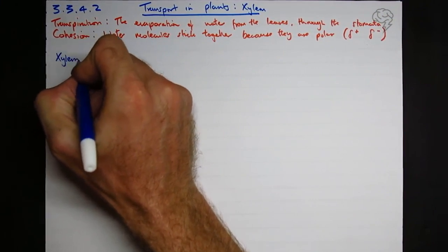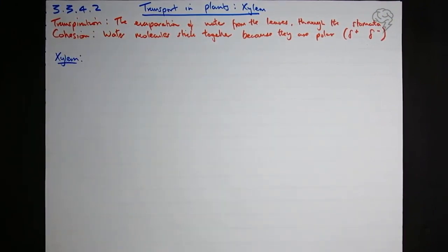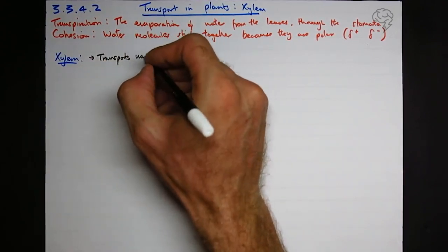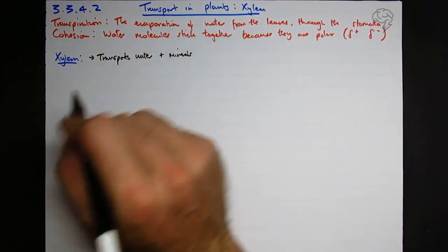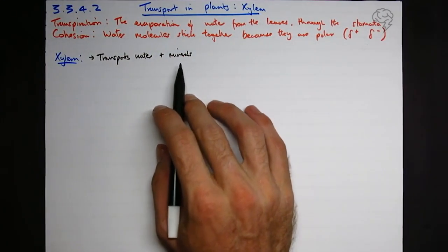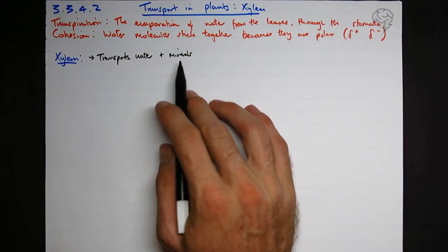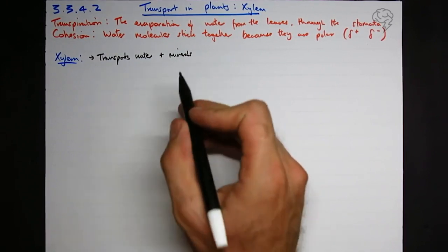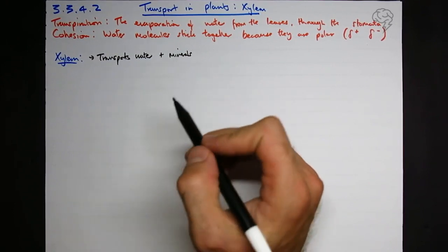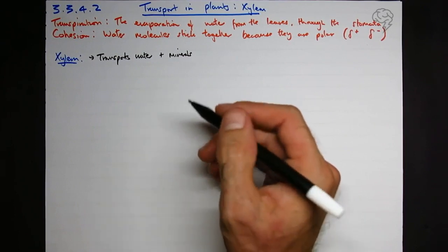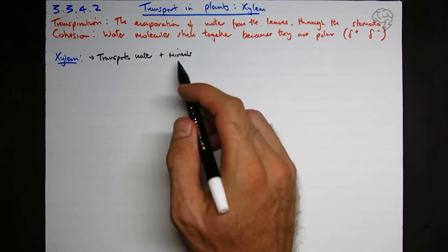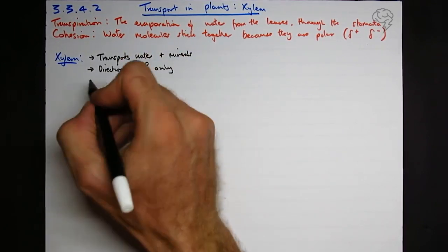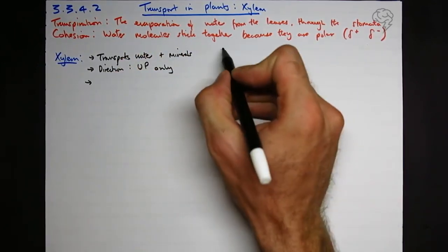So what do we need to know about the xylem itself? Well, the xylem basically transports water and minerals, nothing else. If you're wondering what minerals are, they're inorganic, so they don't have carbon in them. So sodium, phosphorus, all these things, but not amino acids, not glucose. Those are organic compounds, and we don't call them minerals. The direction is up only. Doesn't go down, can only go up.